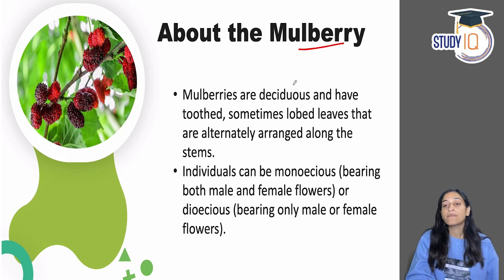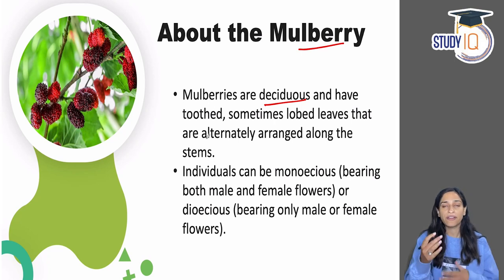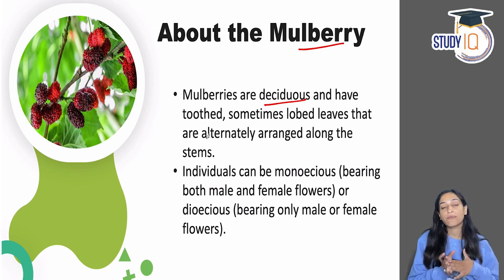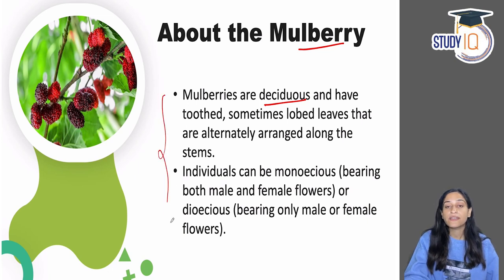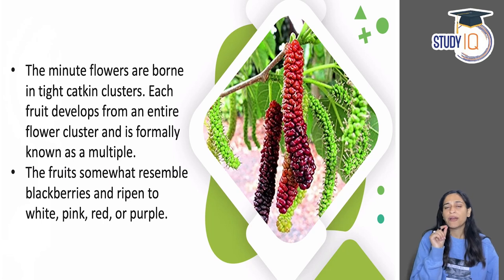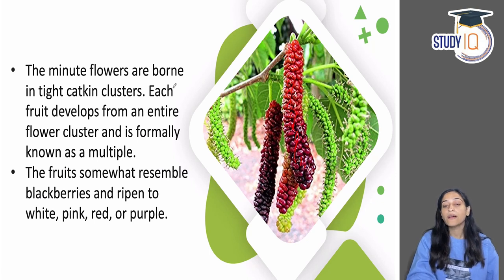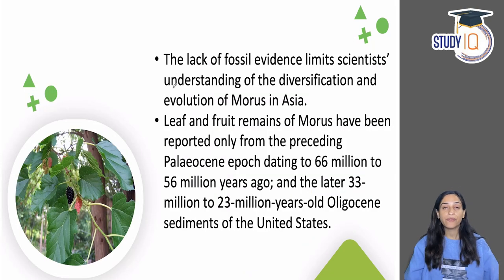Regarding mulberry characteristics: mulberries are deciduous with alternatively arranged leaves. They can be monoecious — meaning a single plant has both male and female flowers — or dioecious, with only male or only female flowers. They have minute flowers, and the fruit grows in clusters, resembling blackberry. When fully ripe, the fruit is white, pink, or dark purple — it usually appears black but is actually dark purple or red.